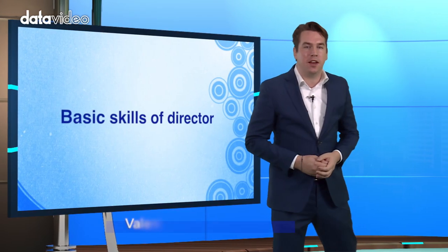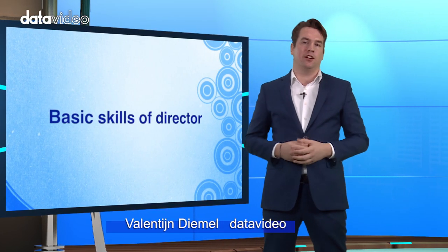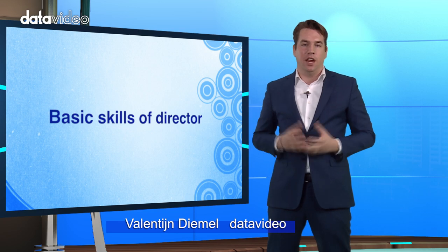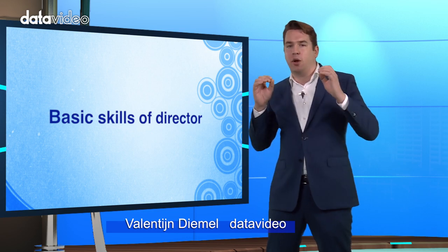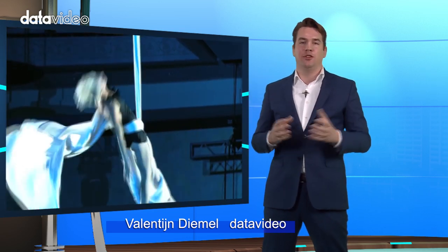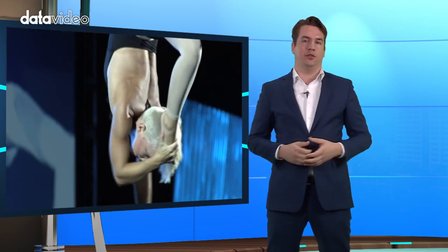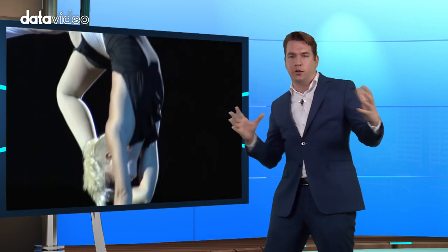The key person in EFP production is the director. He or she handles all the program production, using different camera shots and switching between them to tell the story. The director can choose to hard cut between different shots or soft dissolve to create a flow in the story.